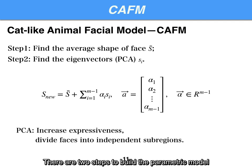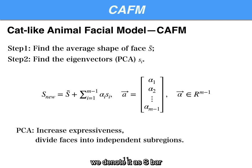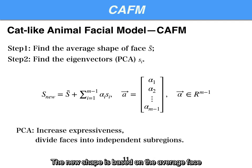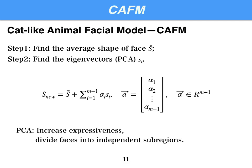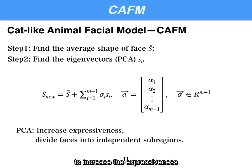There are two steps to build the parametric model. The first step is to find the average shape of the face, which we denote as S-bar. Then we find the eigenvectors Si. The new shape is based on the average shape and can be characterized by the value assignment of shape parameters alpha. PCA is used in step 2 to increase expressiveness by dividing faces into independent sub-regions.